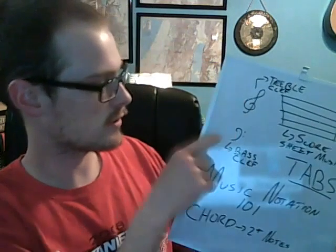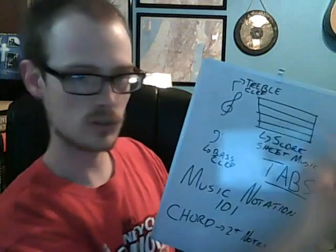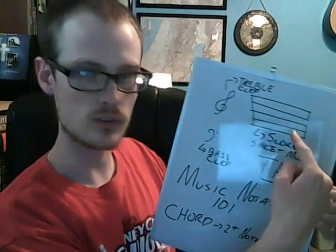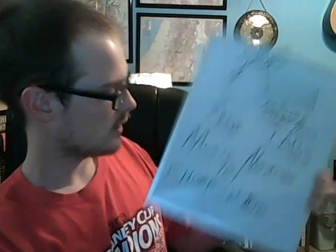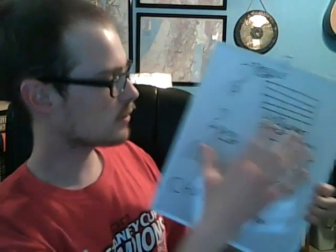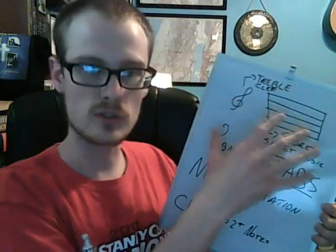So this is a treble clef and this is a bass clef. This is a score, also called sheet music. And this is what's called music notation.